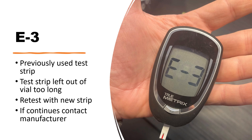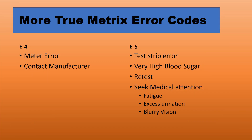Simply retest with the correct test strips and that should take care of E2. E3 indicates that you're attempting to reuse a test strip that has been previously used, or that the test strip was left out of the vial too long. Simply use a new test strip and retest. If it continues, you can contact the manufacturer.